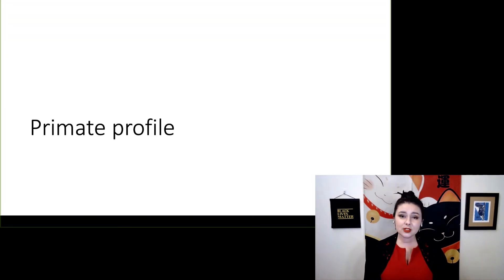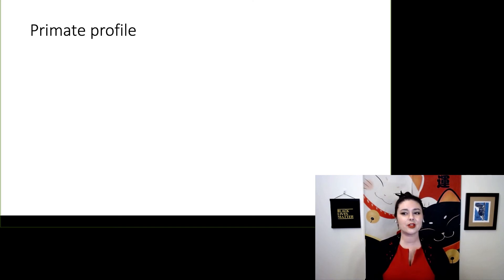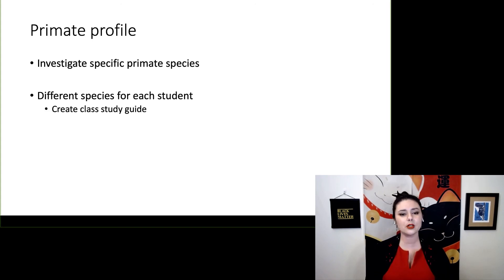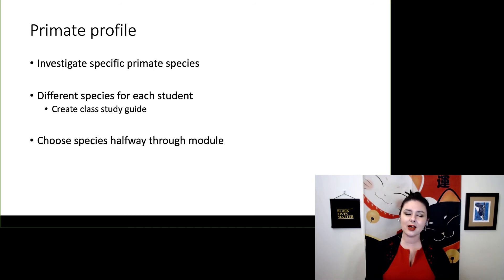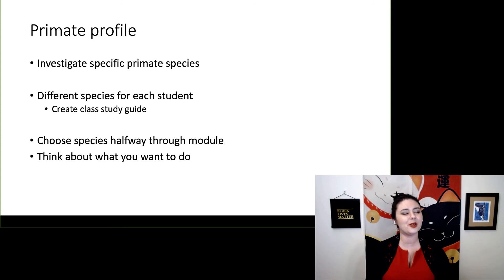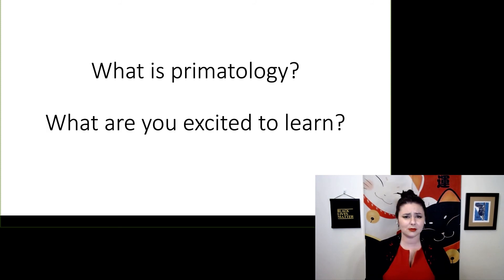What we're building to at the end of this module is our primate profile. This is an assignment that will allow each student to investigate a specific primate species, and we're going to make sure that each student in this class looks at a different primate species so we can create a class study guide. We'll be choosing our species about halfway through the module once we're familiar with the different primate groups. So as you're going through the beginning of this unit, think about what you want to do — what is primatology, and what are you excited to learn?